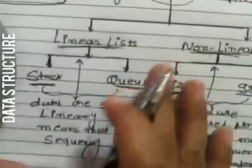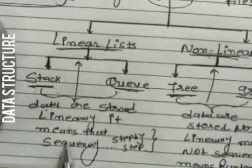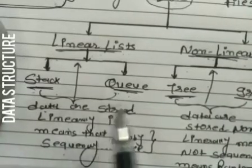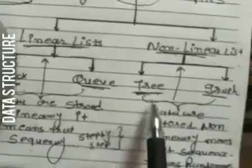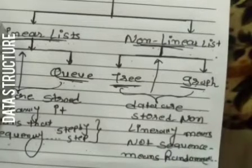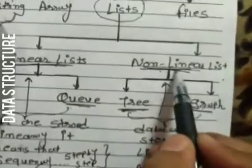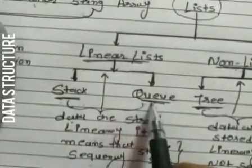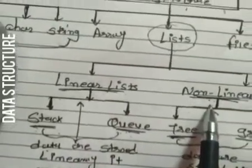Stack and queue are not non-linear because in stack and queue, data is stored linearly — meaning sequentially, step by step. Stack and queue store data linearly, meaning in sequence. Tree and graph store data non-linearly, meaning data is not stored in a fixed sequence. So tree and graph are included in the non-linear list, and stack and queue are included in the linear list. Both types are divided from list.